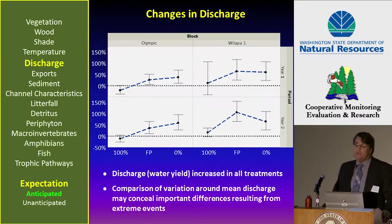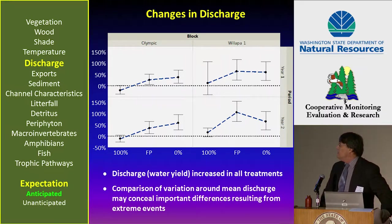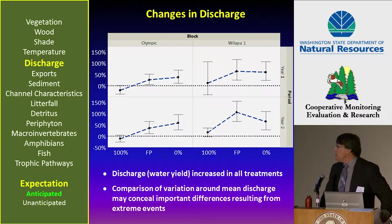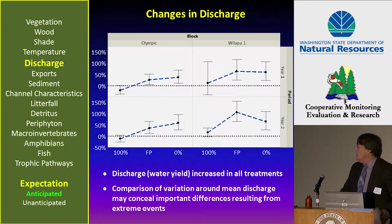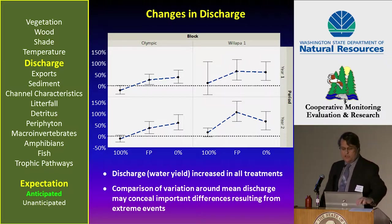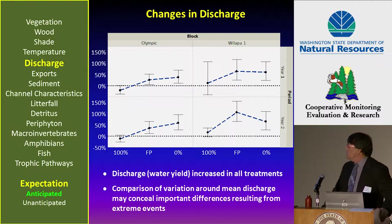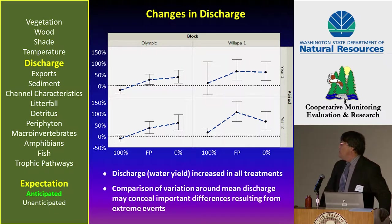The next variable is discharge or flow. Discharge was compared in context of mean values, so the values shown here are variations around the mean. In general, discharge increased in all treatments. But the mean comparison may not be the best way to understand variation, and it may conceal important differences resulting from extreme events.